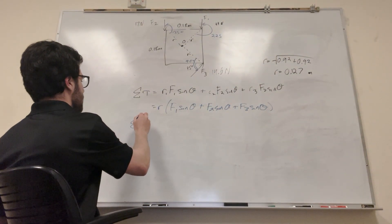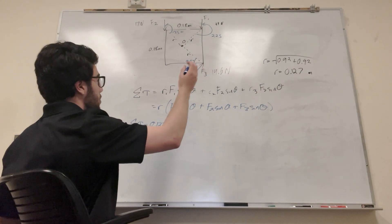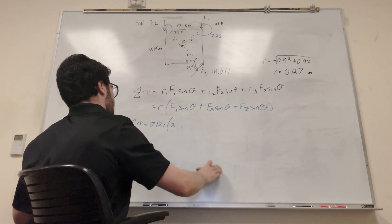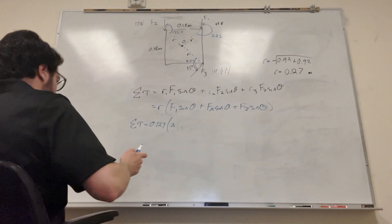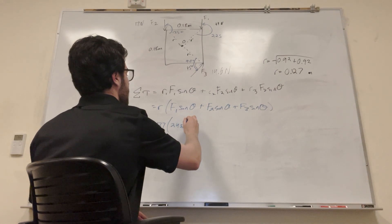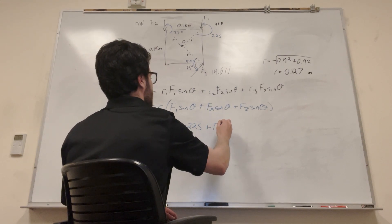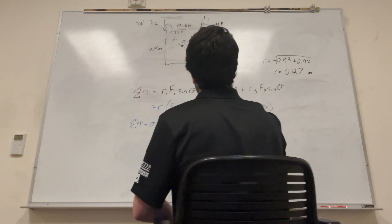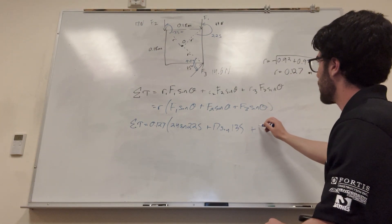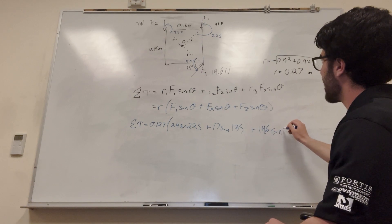So the sum of the torques is equal to the radius of 0.127 times all of this, so force one, 24. Not 27, 24. Can't read my own handwriting. Okay, 24 sine of 225 plus force of 2, which is 17 sine of 135, and then plus force of 3, 14.6 sine of 90.